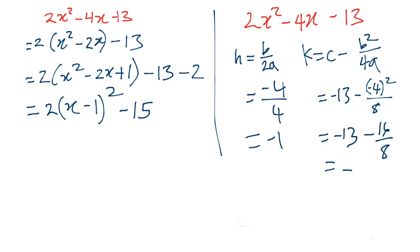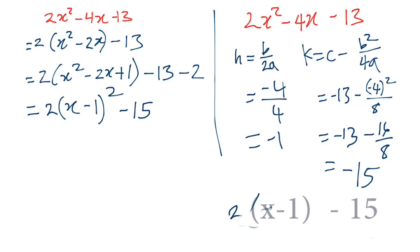So k = -13 - 16/8 = -13 - 2 = -15. Substituting h and k, we get the same result: 2(x - 1)² - 15. Both methods give us the same answer.